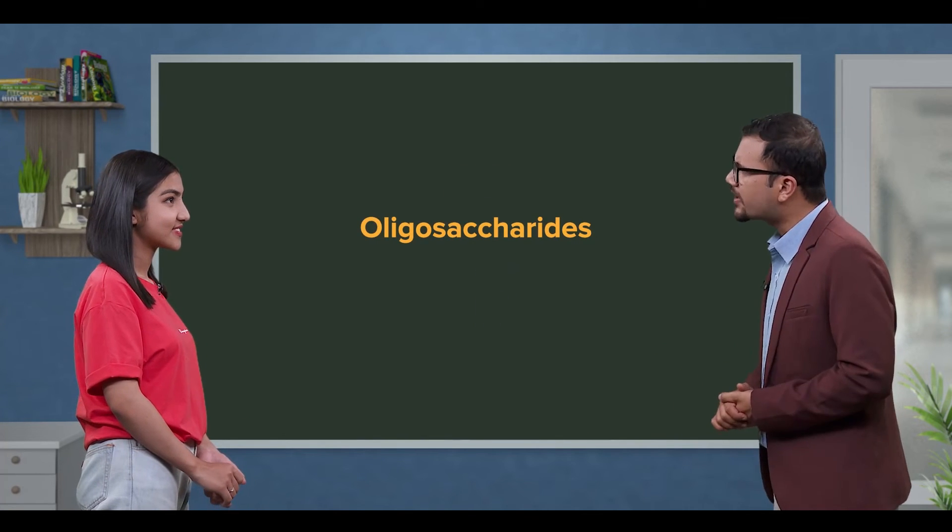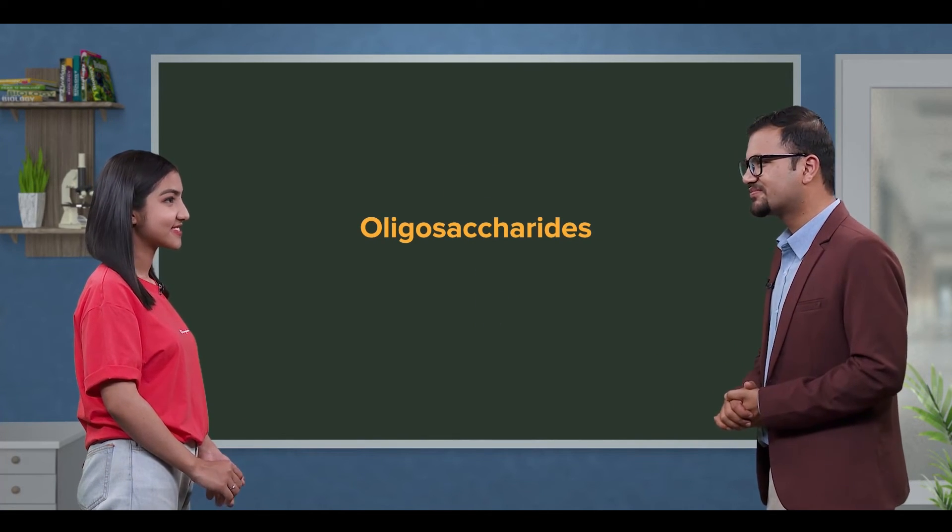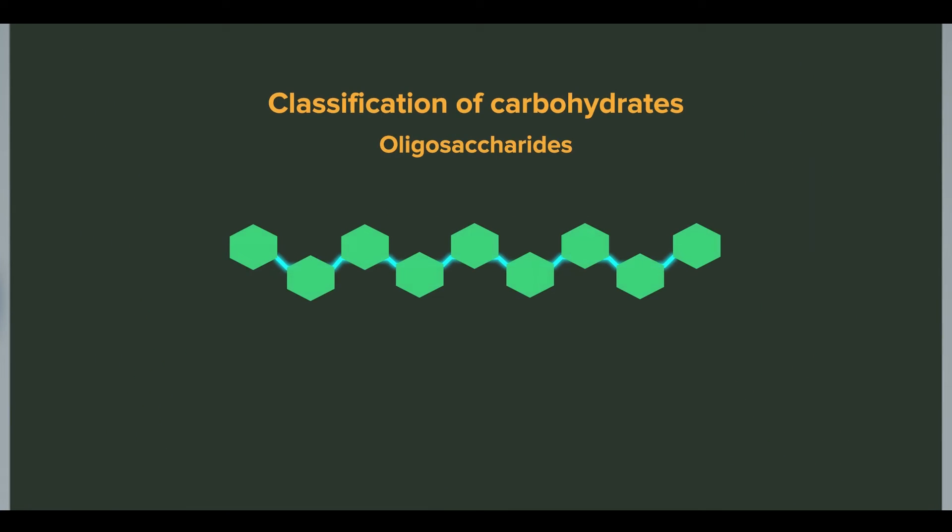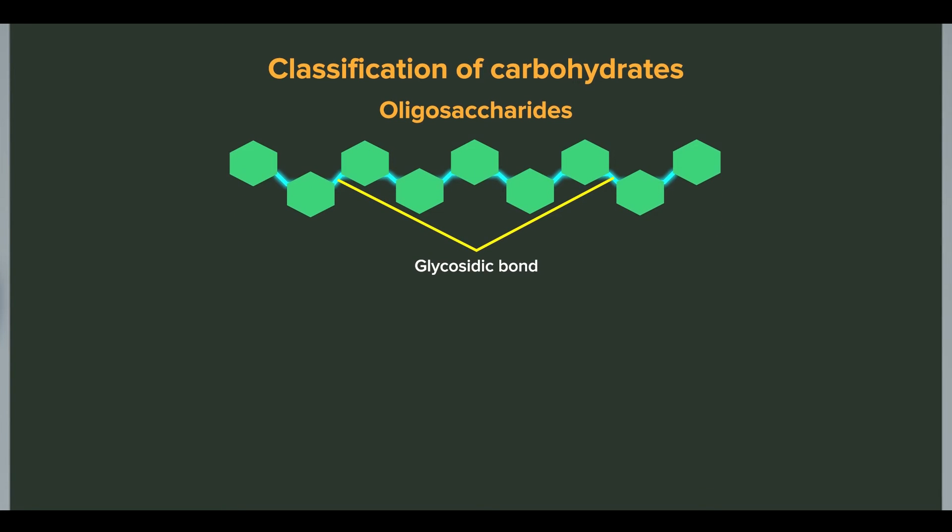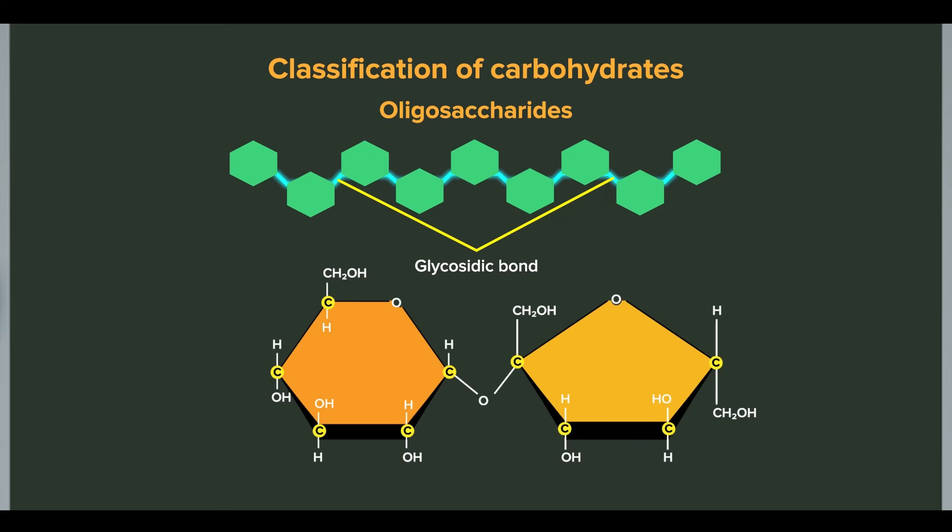Let's start with oligosaccharides. Two to ten monosaccharides molecules are called oligosaccharides. In oligosaccharides, there is one chemical bond: glycosidic bond. Glycosidic bond is formed between carbon, oxygen, and carbon atoms.